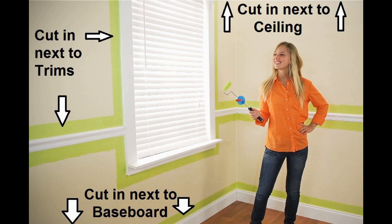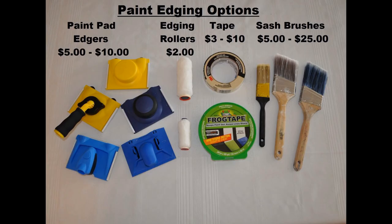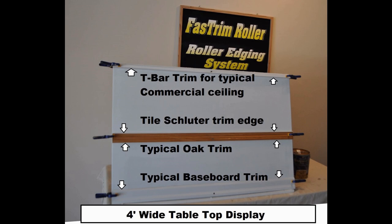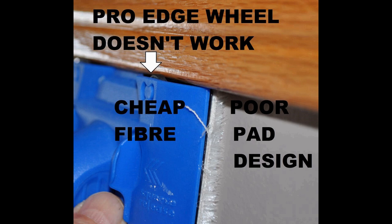The biggest challenge for anyone who has ever painted is edging next to trim, baseboards, and up to the ceilings. The options are paint pads, edging rollers, brush and tape. I will show these various tools used on a four foot wide display with four different types of trim.